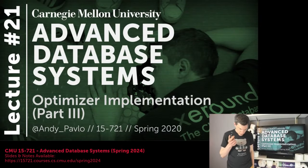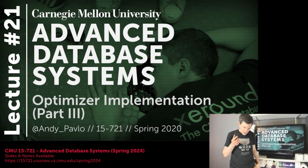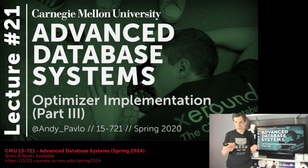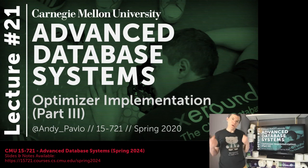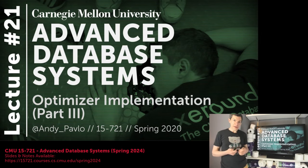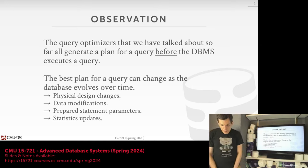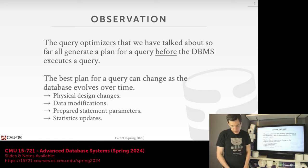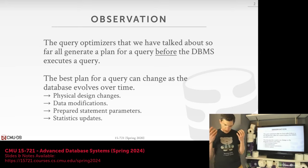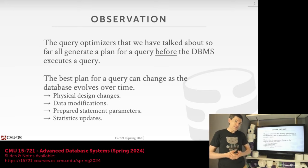The type of optimizers we've talked about so far have been the classic query optimizers where the query shows up, we parse the SQL, then we run it through the optimizer and we generate a plan before we even begin executing the query. This is how most query optimizers work — you can't run the query unless you have a query plan. But the challenge is that what we think is the best plan during this optimization phase may actually be incorrect.